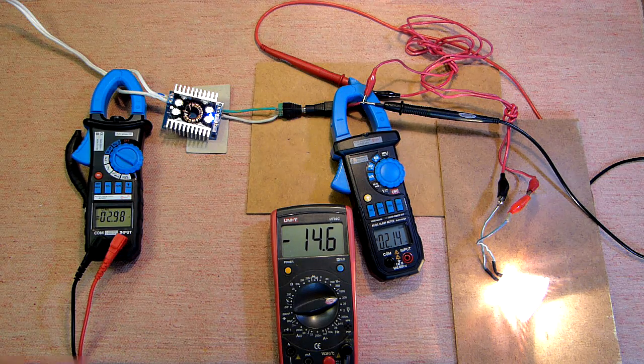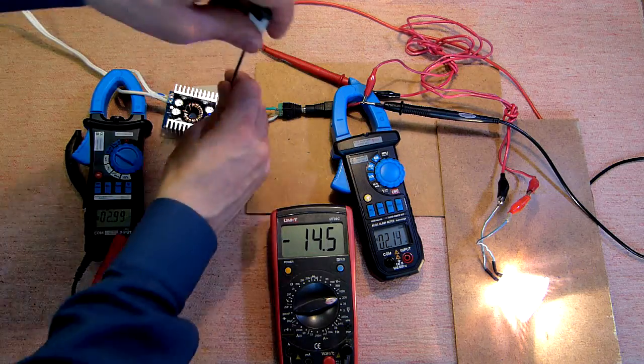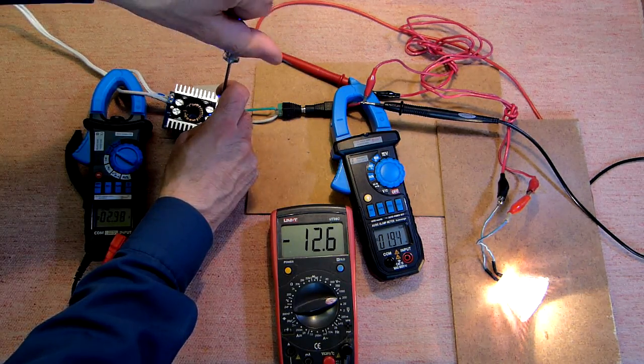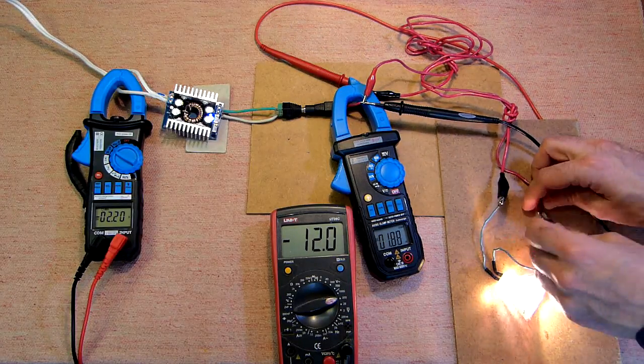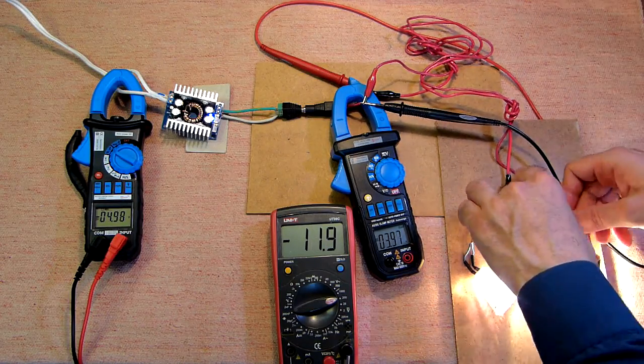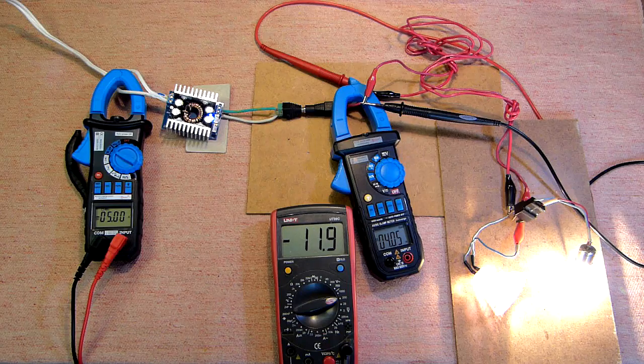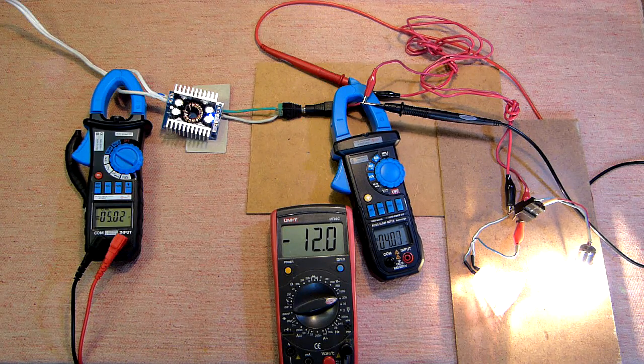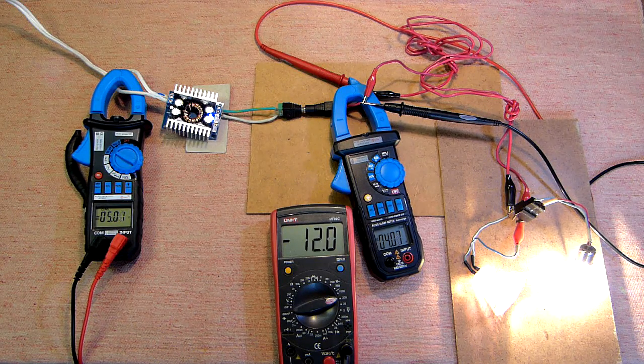Let's decrease the output voltage and increase the load. The second one is also 20 watt car bulb. And now let's increase the voltage and see the result.